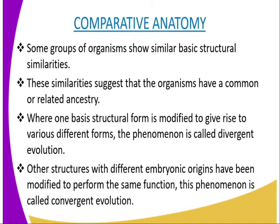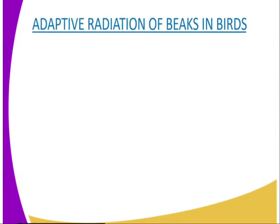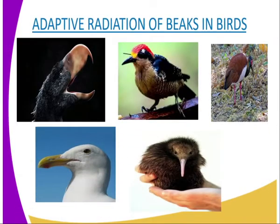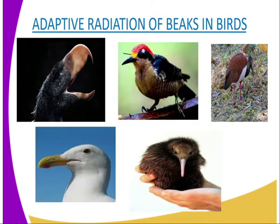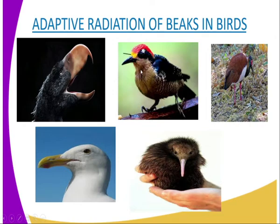Divergent evolution is where, ranging from the same basic structure, organisms have been modified to perform different functions. These divergent forms originating from a single ancestral form may each become adapted to a different ecological niche in the given habitat. For example, our first diagram here — the beak is adapted to eat meat, because after the pangea, the climate or the habitat it went to could not have allowed other means of survival other than feeding on meat.